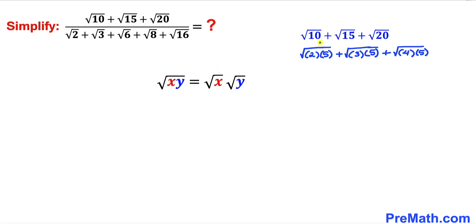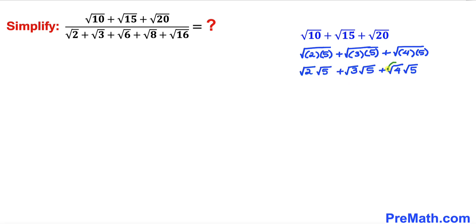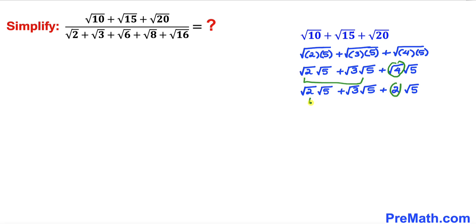So this first radical can be written as √2 times √5, the next as √3 times √5, and the last as √4 times √5. Now √4 equals 2, so I replace √4 with 2. We can now see that √5 is common across all three terms.